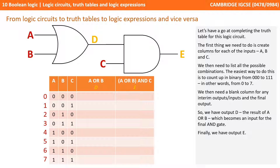Let's have a go at completing the truth table for this logic circuit. First, we create columns for each of the inputs: A, B and C. We then list all possible combinations by counting up in binary from 000 to 111 — the binary numbers 0 to 7. We also need a blank column for any interim outputs. So we have output D, which is the result of A OR B, and then finally output E.